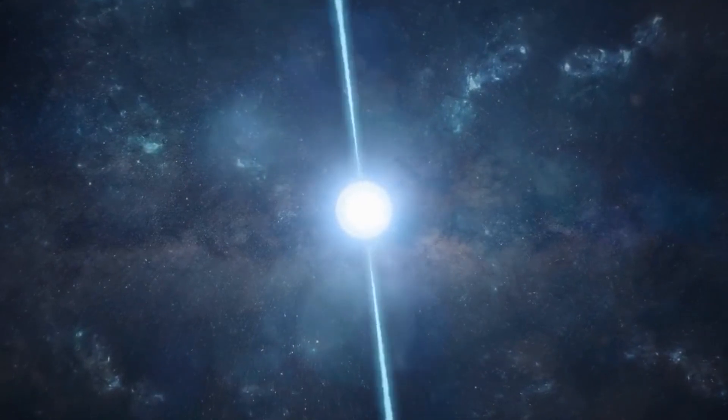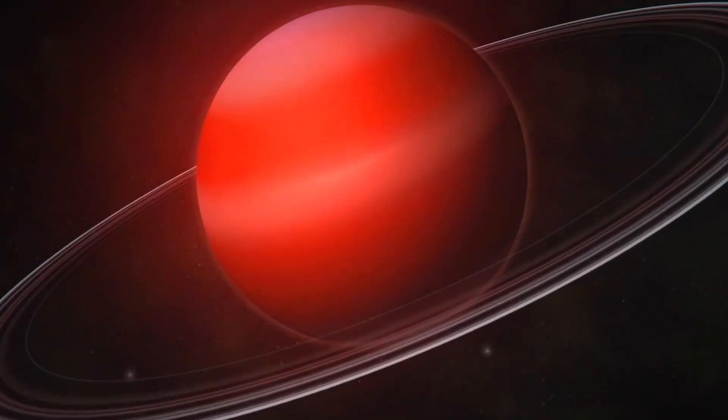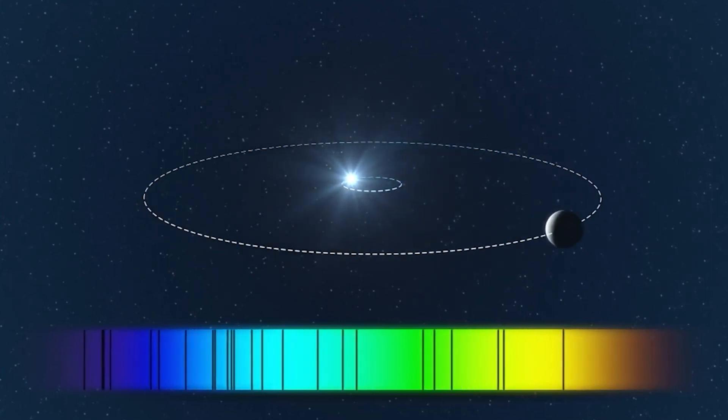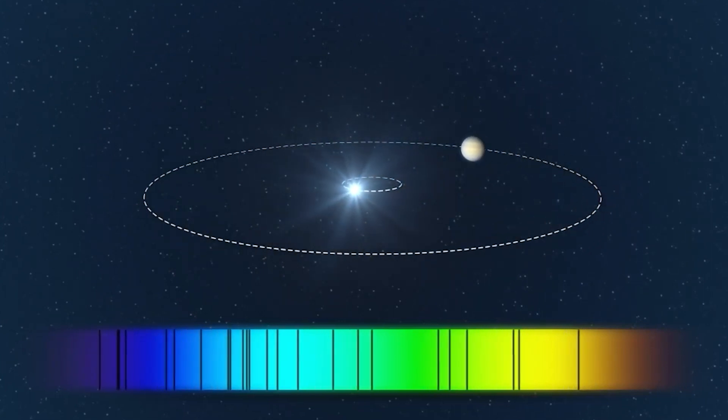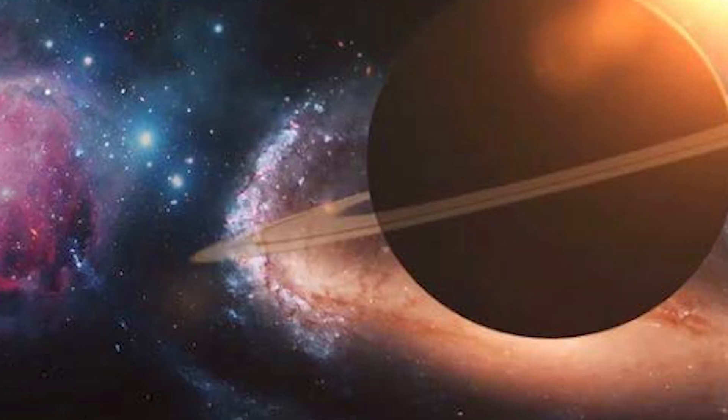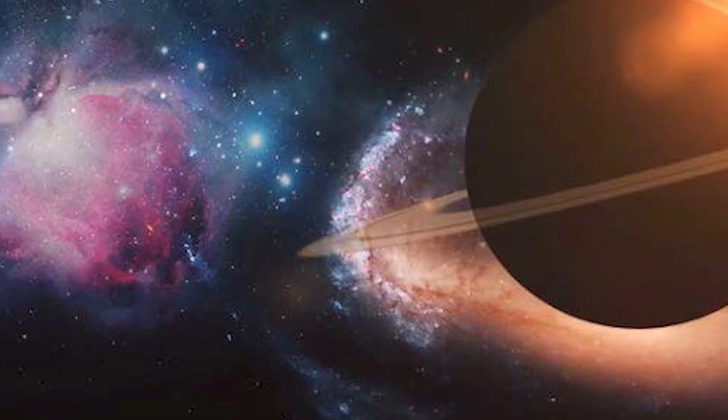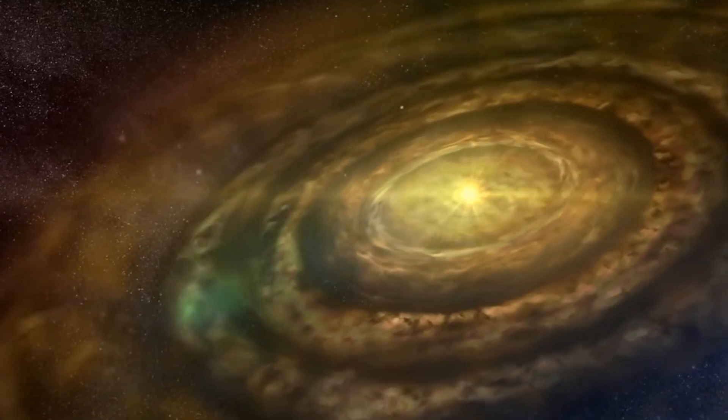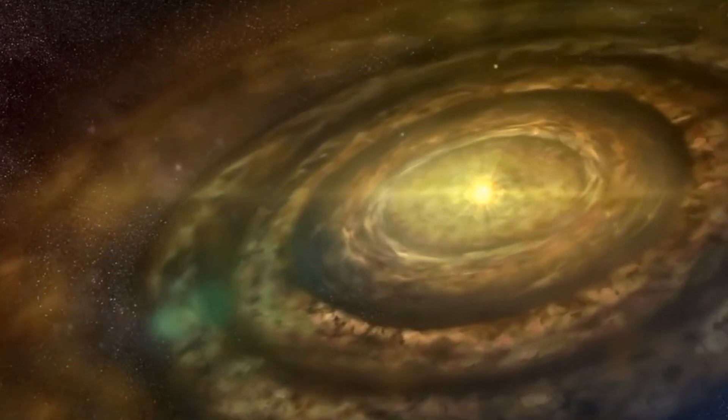Picture this: planets of similar sizes, cozying up together not too far from their host star. It's like a star system version of a friendly planetary dance party. This setup, often found in red dwarf systems like TRAPPIST-1, appears to be a popular trend among various star systems, big or small.